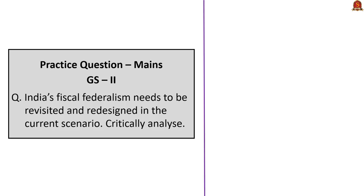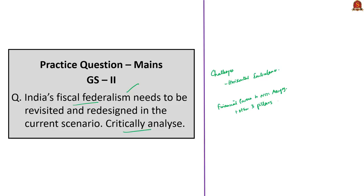The mains question asks to critically analyze the need to revisit and redesign India's fiscal federalism. In your answer, mention what fiscal federalism means, then discuss the challenges states face regarding horizontal imbalance. Give suggestions such as giving financial powers to NITI Aayog, moving toward a more decentralized government structure, and improving the GST regime. You can also add points of appreciation like the current Finance Commission's role and the introduction of GST, since the question asks for critical analysis.